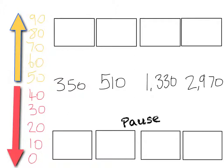Now have a go at rounding these to the nearest hundred in your books. Make sure you know which multiples of a hundred each number lies between before you decide whether to round up or down. Away you go.